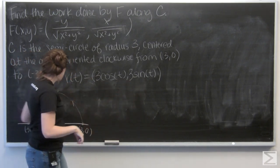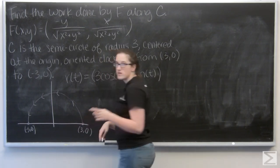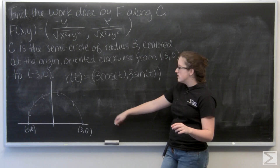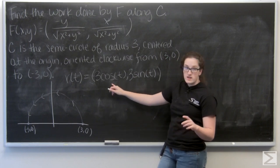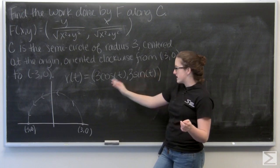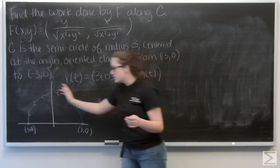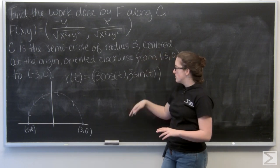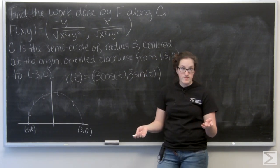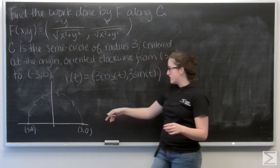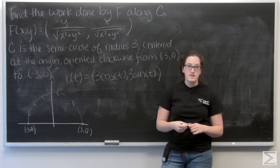And I'm not going all the way around, so I need to figure out exactly what my bounds are for t. Well, I know they start at 0. Cosine of 0 is 1, sine of 0 is 0, so I get (3,0). But then I need to go to (-3,0), so π, right? 3 cosine of π is 3 times -1, which is -3, and then sine of π is 0.